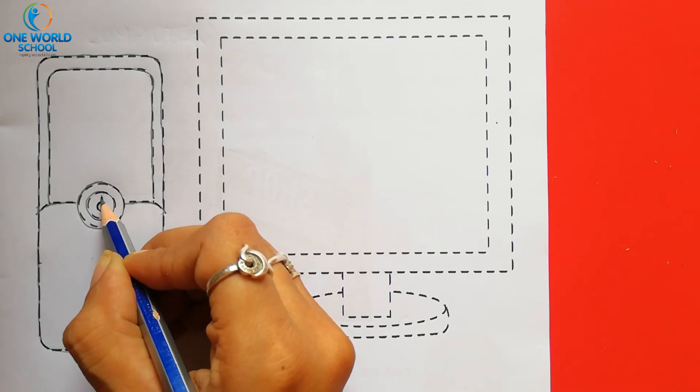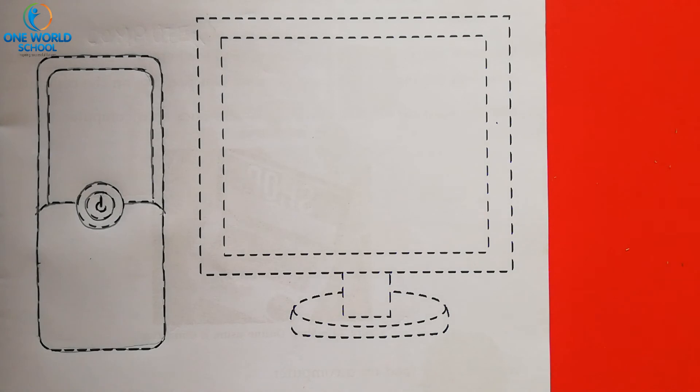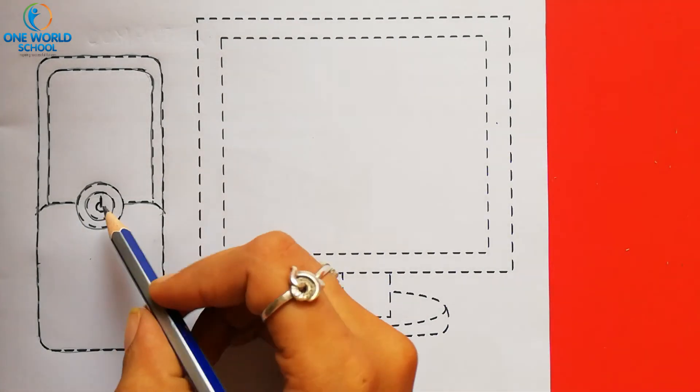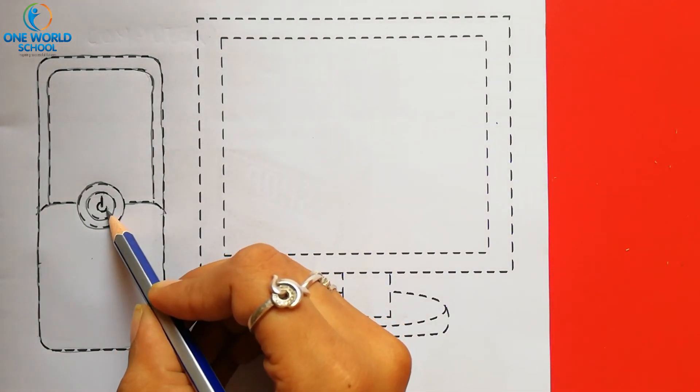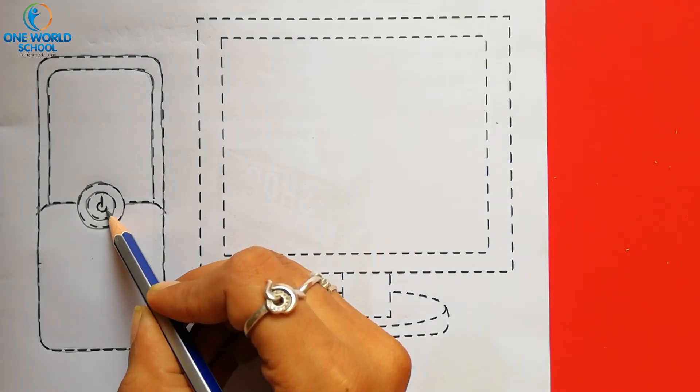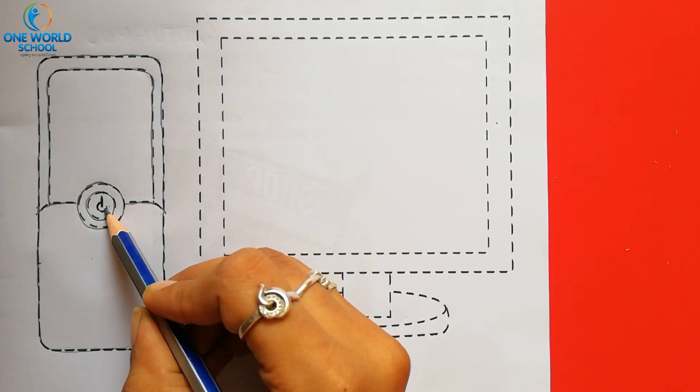Power button किसके लिए होता है? Computer को start करने के लिए. हमने आगे learn किया था ना. कि कोई भी computer को start करने के लिए. सबसे पहले हमें power supply को start करना है. और उसके बाद. जो CPU होता है. उसका power button start करना है. यह CPU का power button है. और उसको press करते ही. हमारा जो computer है वो start हो जाएगा.